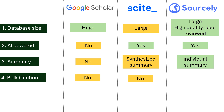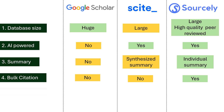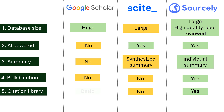When it comes to bulk citation — like an entire paragraph or entire document — Sourcely clearly stands out. With just one click, it gives you references for all citation-worthy statements. You can also manage references by adding papers to Sourcely's built-in library, making the research workflow much more convenient. Later, you can export everything for use in Mendeley or Zotero. Cite AI doesn't have an integrated library management option, though it does allow you to export to Zotero. Google Scholar also has a library feature, but it's quite basic.